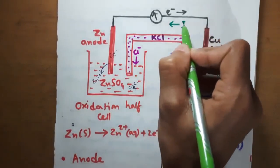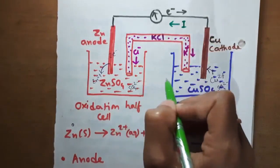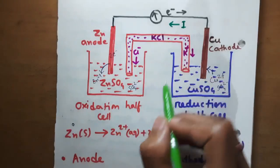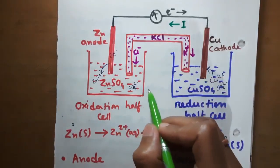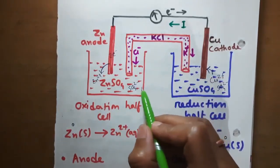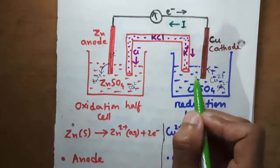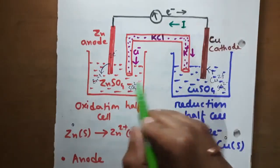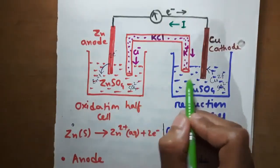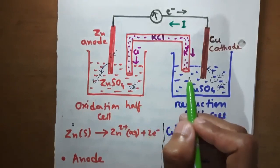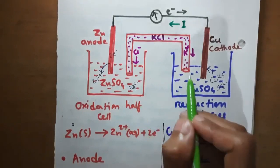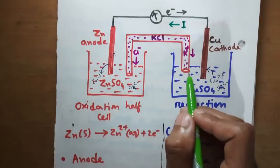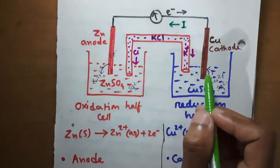We can produce electrical energy by a spontaneous chemical reaction. The chemical reactions in the two half cells are spontaneous because we have not used any external potential source.